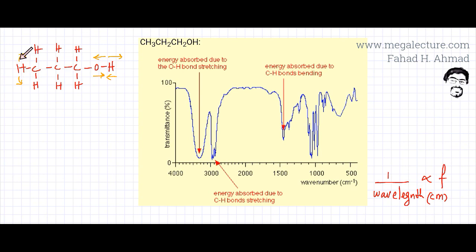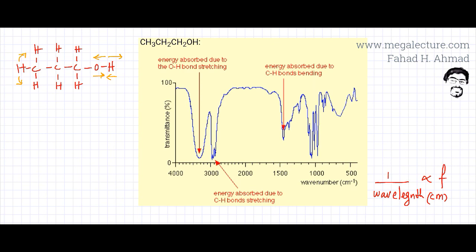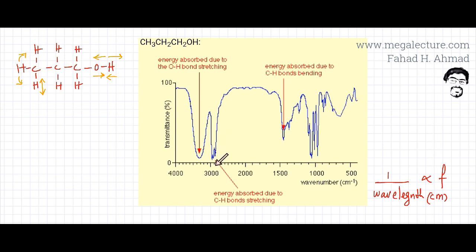Similarly, the CH bonds — there are lots of carbon-hydrogen bonds in this molecule — might be vibrating to and fro. This absorption here is described as the energy absorbed due to the CH bonds bending. This is the wave number absorbed from the infrared spectrum when the CH bond absorbs energy. And there's another absorption described as the energy absorbed due to CH bonds stretching — around wave number 2,900.